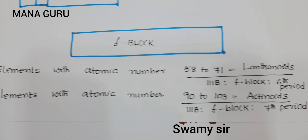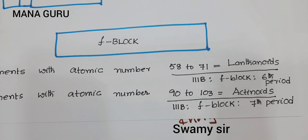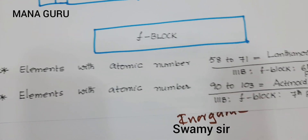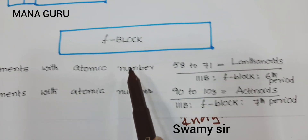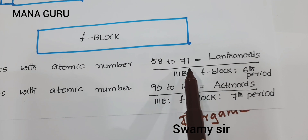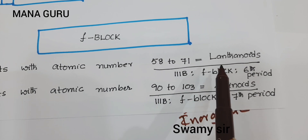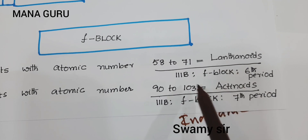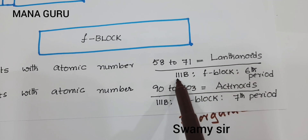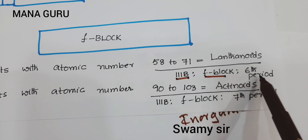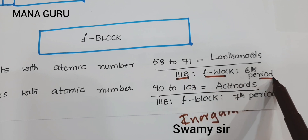Before entering the tricks, here is my first trick. Elements with atomic number 58 to 71 are called lanthanoids. These belong to — remember — third B group, F block, and sixth period.